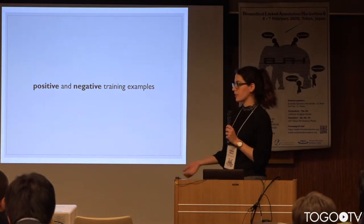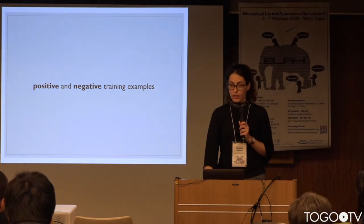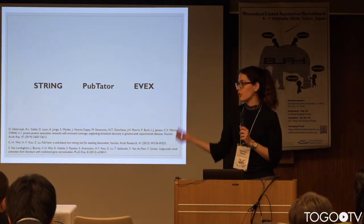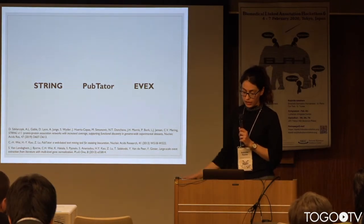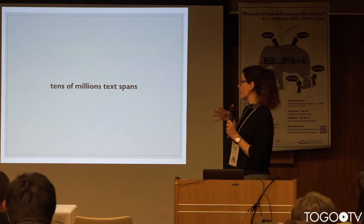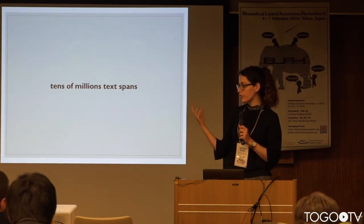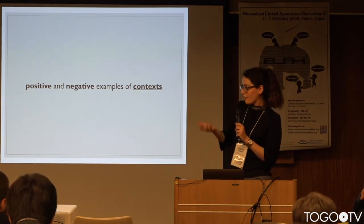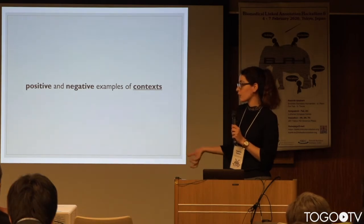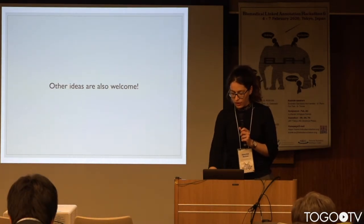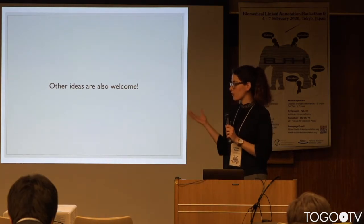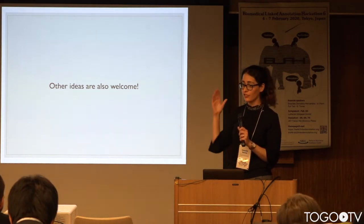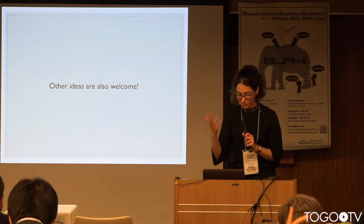What do we need for that? We need positive and negative training examples. Our idea is to use three named entity recognition systems — the one used in STRING, Paptator, and EVEX — and from those results we will have tens of millions of text spans on which the systems agree or disagree. From those we can create positive and negative examples of contexts around these entities. If you have other ideas for how to create the training datasets, you are very welcome to share them.